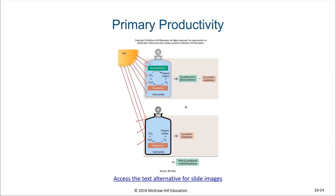Measures of primary productivity can be done by taking a water sample and storing it in either a transparent chamber or an opaque dark chamber. That dark chamber tells us how much oxygen is being used by respiration and how much organic matter is being broken down by those diatoms. We can compare those two chambers to determine the net production of oxygen from photosynthesis.